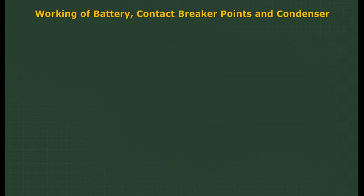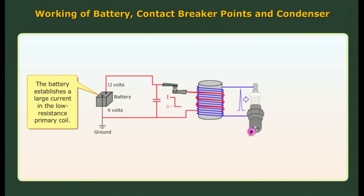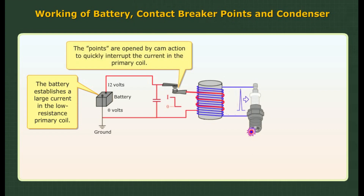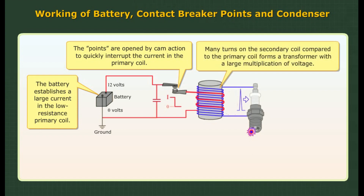Working of battery, contact breaker points, and condenser: The battery establishes a large current in the low-resistance primary coil. The points are opened by cam action to quickly interrupt the current in the primary coil. The secondary coil has many more turns than the primary coil, forming a transformer with a large multiplication of voltage. This produces a large voltage spike applied to the spark plug.